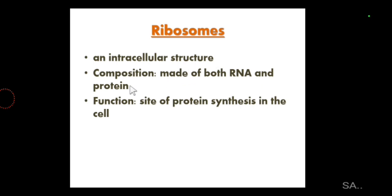Looking at the composition of ribosomes, they are made inside the cytoplasm with the help of RNA — specifically ribosomal RNA. That ribosomal RNA combines with different types of proteins and enzymes so that the ribosomes are formed.